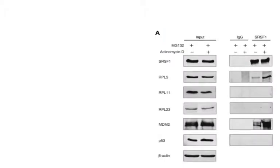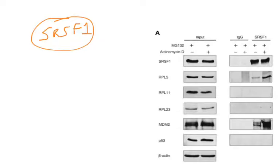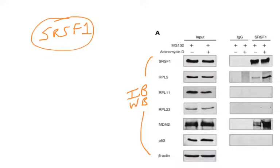Let's look at a real example from a paper found online. Researchers are studying a protein called SRSF1, and just by looking at the figure we can figure out what proteins it interacts with. On the left, labeled 'input,' are the other proteins being studied: RPL5, RPL11, RPL23, MDM2, P53, and beta-actin. These cells have been treated with drugs MG132 and/or actinomycin. The input panel is just a straight Western blot of total protein levels, and those levels don't dramatically change with drug treatment.